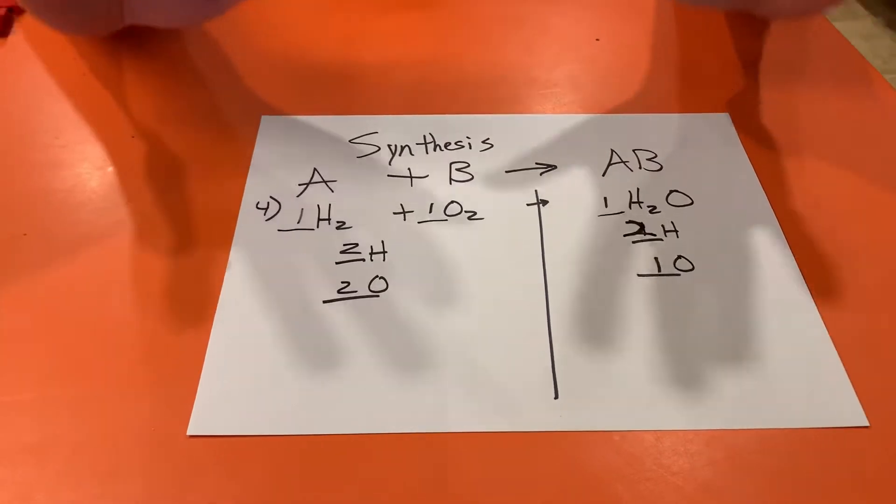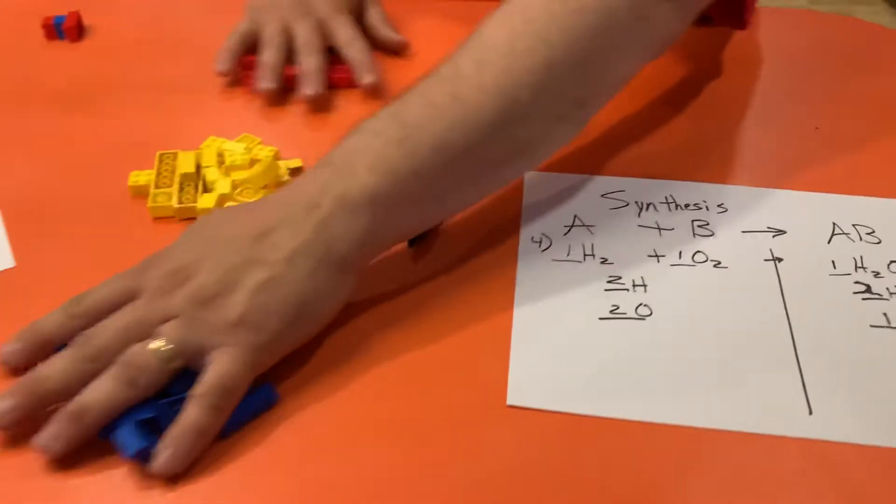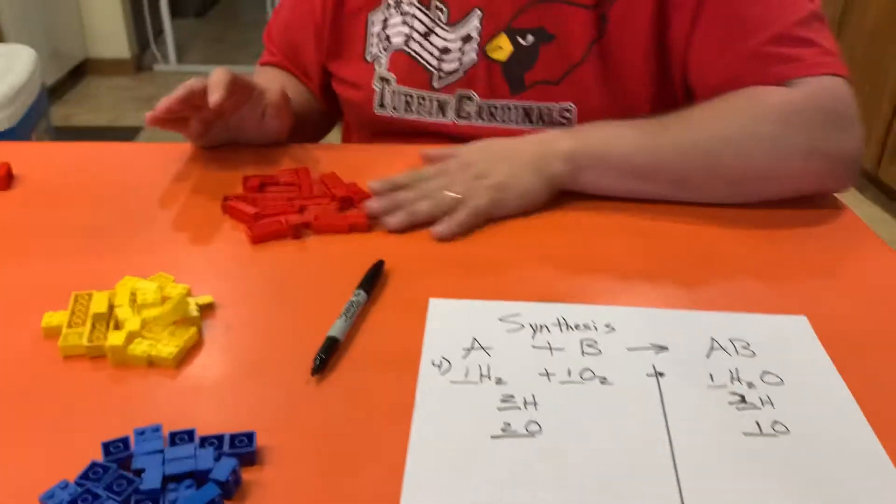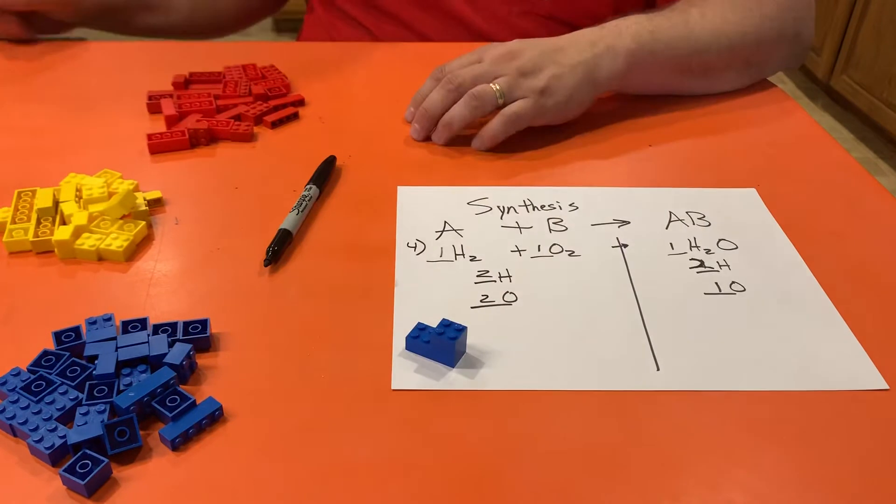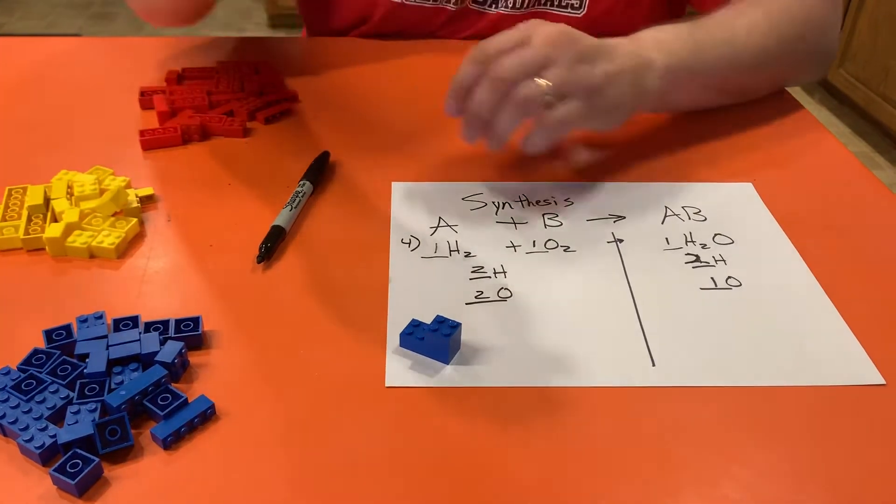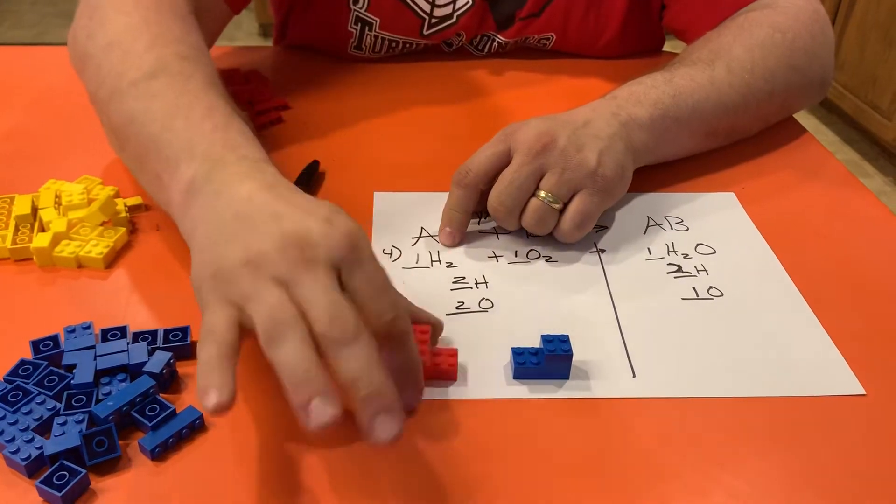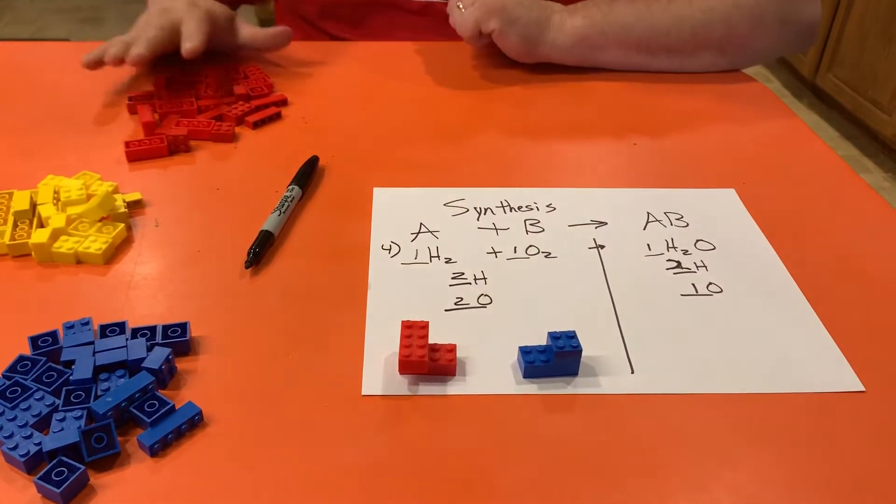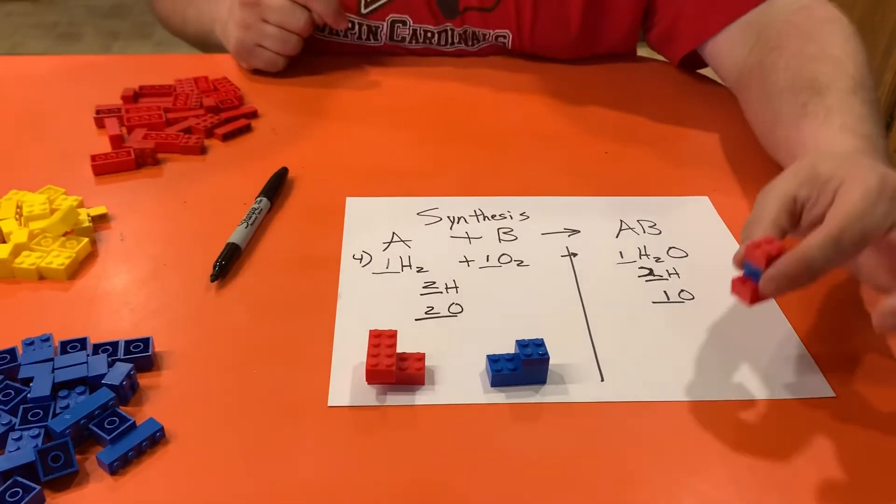It's time for the Legos. Let's make this thing make sense with Legos. Okay, so I'm gonna use reds and blues to make this work. And so I've got H2—sorry, O2—and H2. This is two Legos stuck together. Here's two more Legos stuck together.